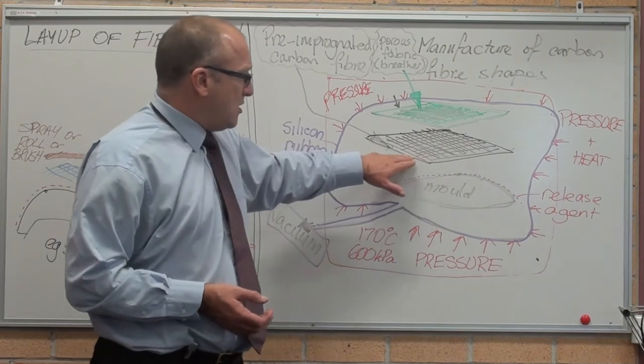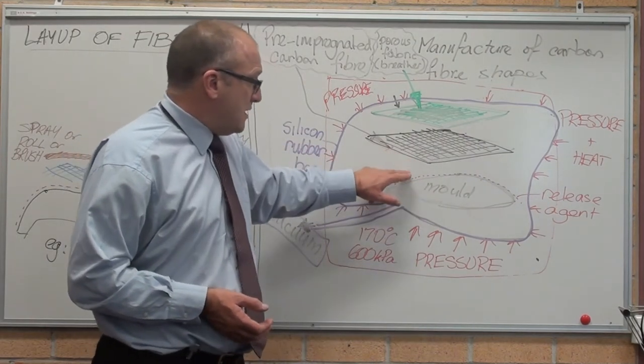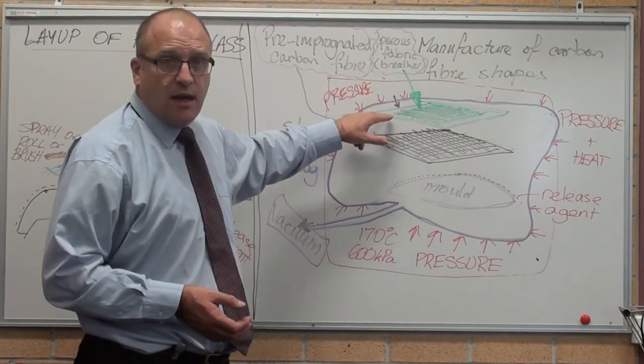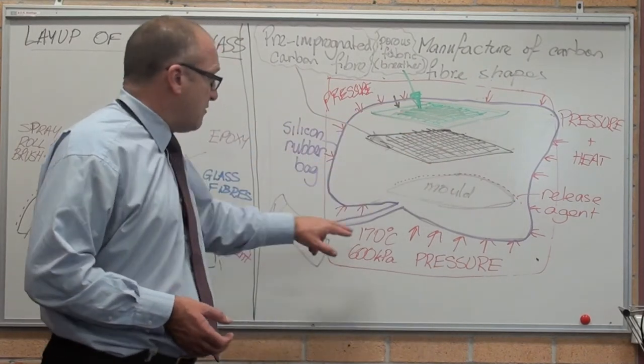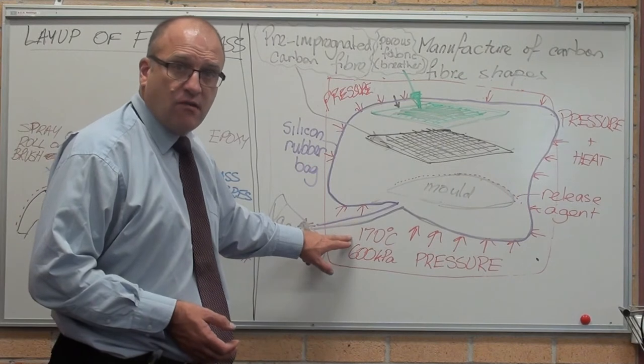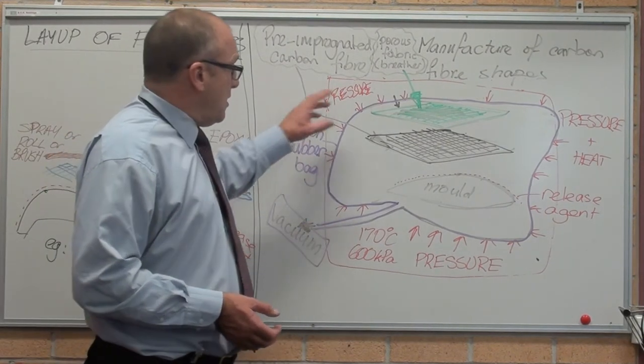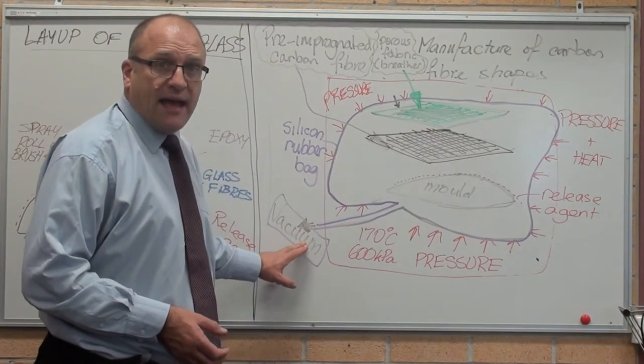We're just laying the carbon fibre on the mould with the release agent. We put a bit of porous fabric on top of it, which acts as a breather, because we put the whole lot in a bag. The temperature is at around about 170 degrees centigrade, so a silicon rubber bag would work well. Put the bag around the outside and apply a vacuum to the bag.